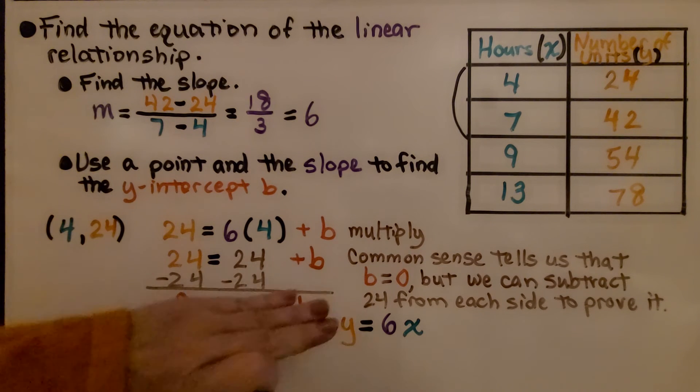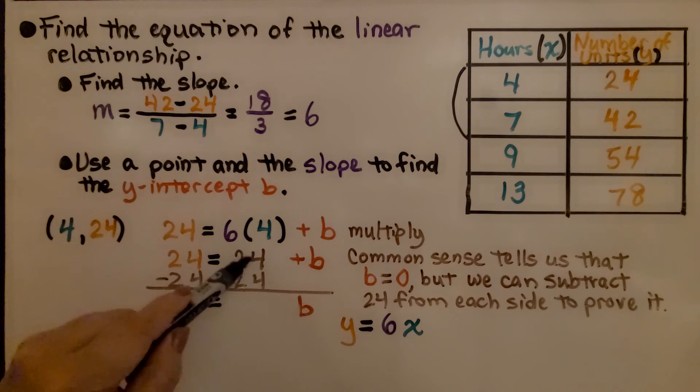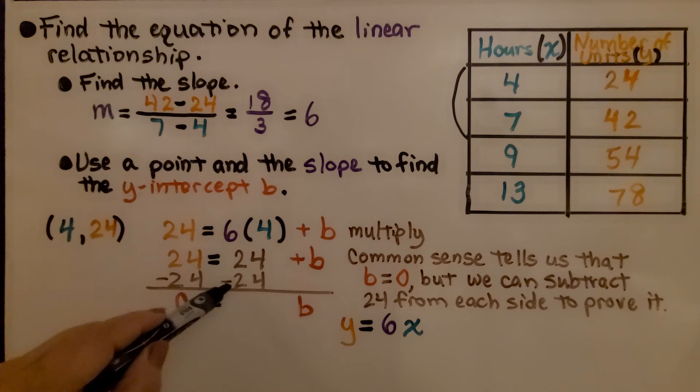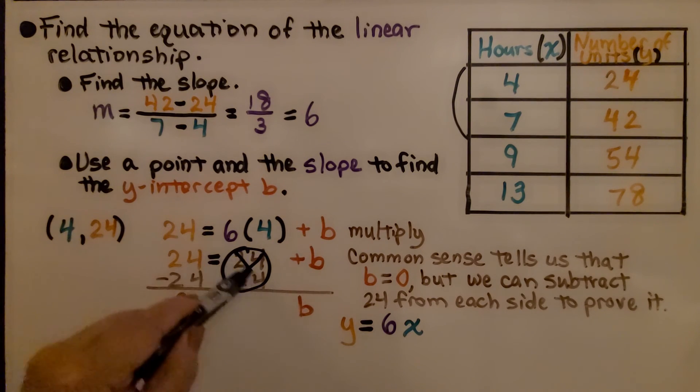We're at this point, and common sense tells us that b has got to be 0. If this is 24 and this is 24, b has to be 0. But we can subtract 24 from each side to prove it mathematically. We have a positive 24 with a negative 24, which cancel each other out as a zero pair.